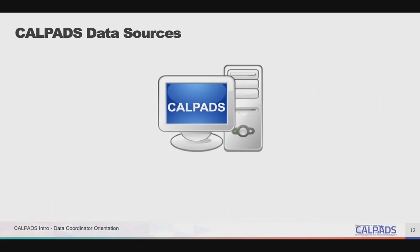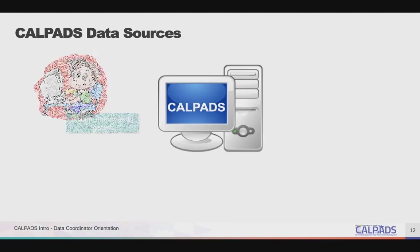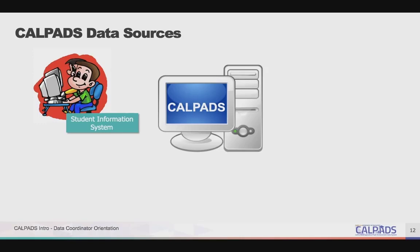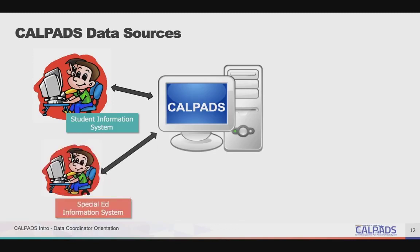CALPADS is a web-based system. All that is needed to access it is a browser and an account. Data comes directly from the LEAs, most commonly through extracting it from local student information systems and uploading into CALPADS. Alternatively, data can be entered directly into CALPADS or uploaded from Excel spreadsheets. Starting in the 2019-20 school year, data from local special ed information systems regarding students with disabilities will also be uploaded into CALPADS.